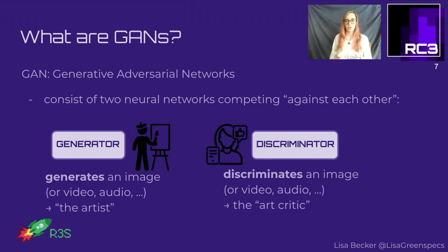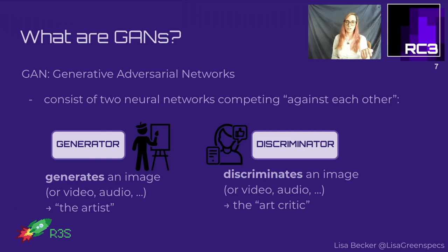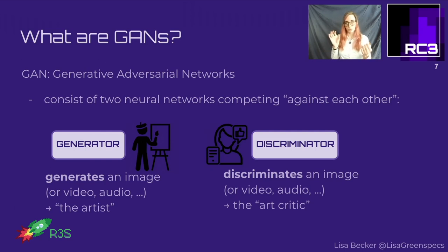GANs consist of two neural networks competing against each other. On one side we have the generator, which generates an image, audio, or video - also called the artist. The discriminator, on the other hand, discriminates an image, video, or audio - also called the art critic - telling whether the input is realistic or not.